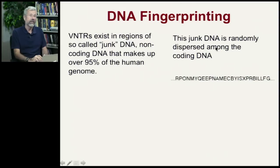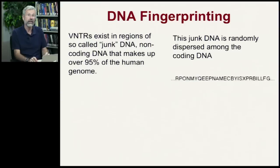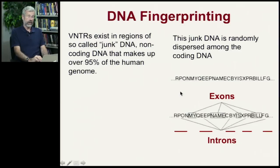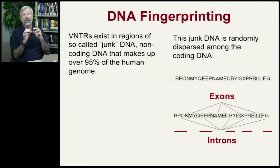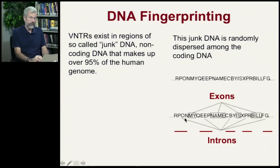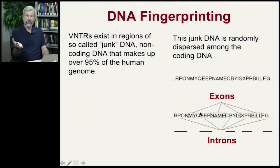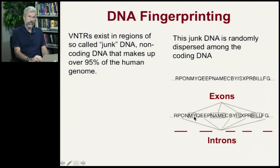This junk DNA is randomly dispersed among the coding DNA in our chromosomes. What happens in the coding region is that the messenger RNA is monitored and modified by various enzymes that remove what are called introns — the rubbish non-coding sequences — while the exons are the segments that actually do code for a protein. So these enzymes look for that in the normal process of translation, and we eventually use the exon sections of the chromosome for coding our protein.